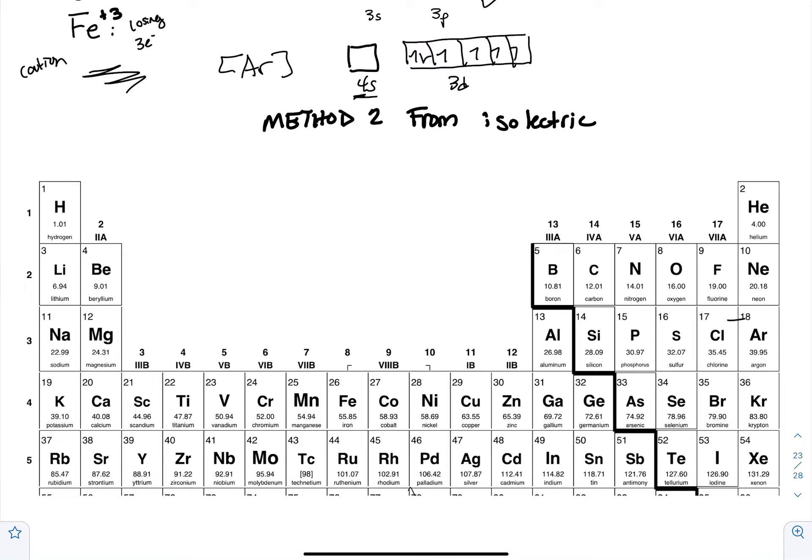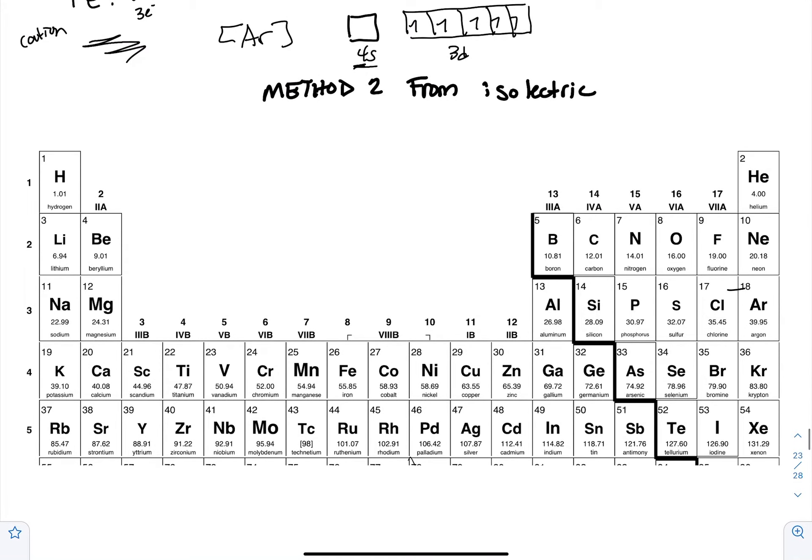This is kind of like reverse Hund's in a way, too. So my configuration—we don't actually write down empty orbitals because chemists think that's a waste of time. I didn't make up the rules. So one, two, three, four, five—those are my five 3d electrons, and then I would have one, two, three, four, five. There you go.